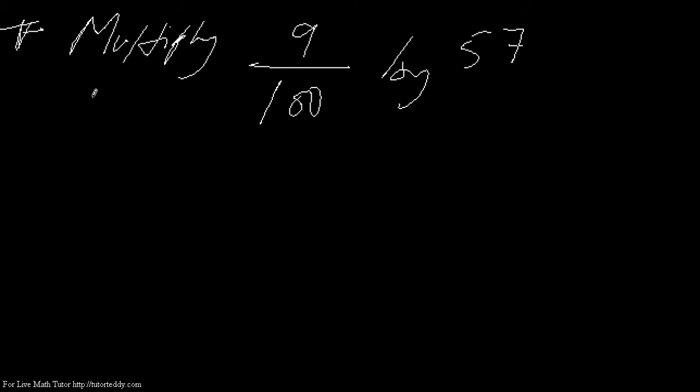Suppose we have a multiplication of fractional numbers where we multiply a fraction with a whole number, say 9/100 by 57. What do we do in this kind of problem?